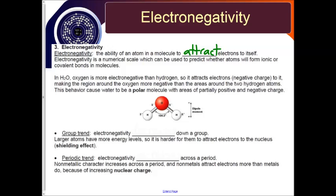For example, in H2O, oxygen is more electronegative than hydrogen, so it's going to attract the electrons closer to it, making the region around the oxygen overall more negative than the areas around the two hydrogen atoms. The hydrogen atoms would then be slightly positive. This behavior would cause the water to be a polar molecule, which means there are areas of partially positive and negative charge.